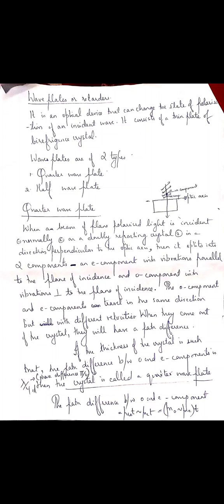All these come under changing the state of polarization. So, wave plates are optical devices which can change the state of polarization of an incident polarized wave. And what is this wave plate? It is simply a doubly refracting crystal having some specific thickness.